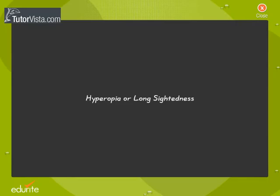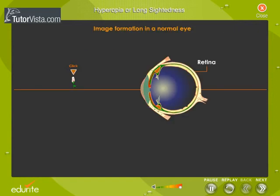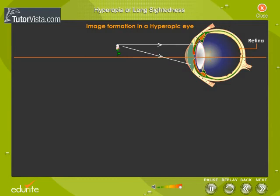Hyperopia, or Long Sightedness, is an eye defect where the distant vision is clear while near vision is blurred.